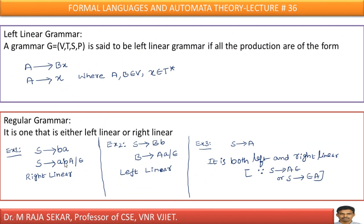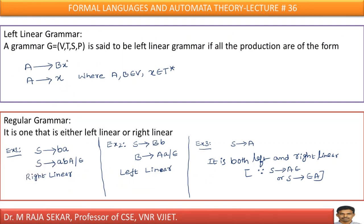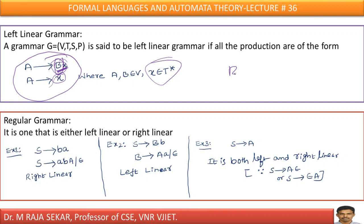Left linear grammar: productions must be of the form A→Bx or A→x, where x belongs to T* (only terminals, including zero terminals). If a capital letter occurs, it must appear on the left side — as in Bx where B is on the left side. Therefore that is known as left linear grammar.